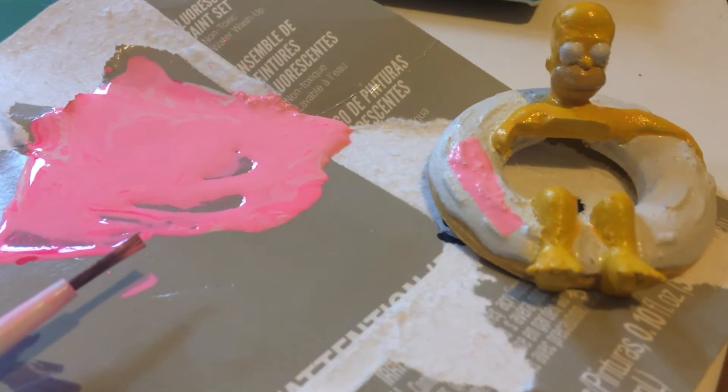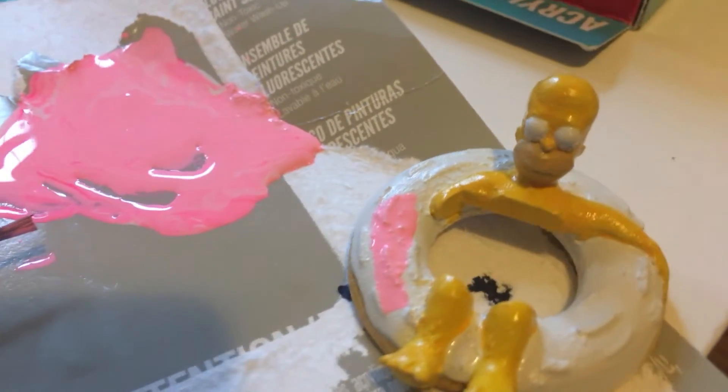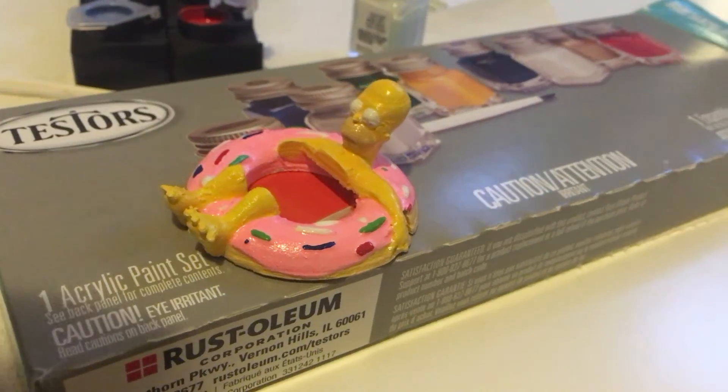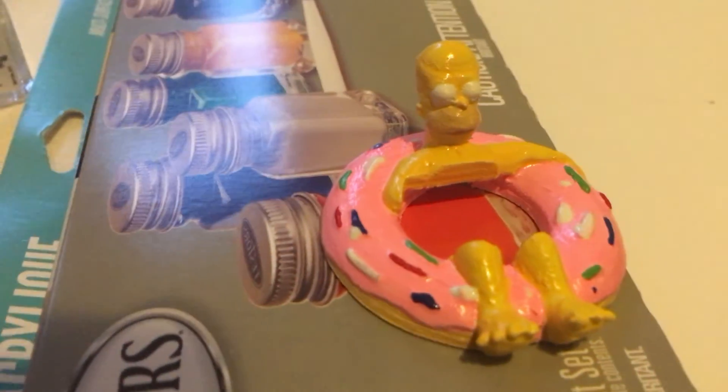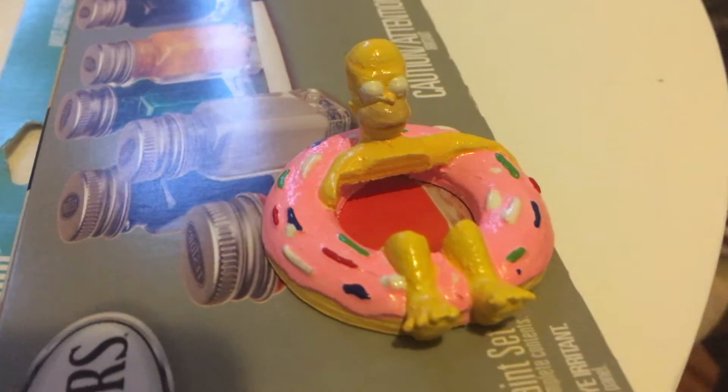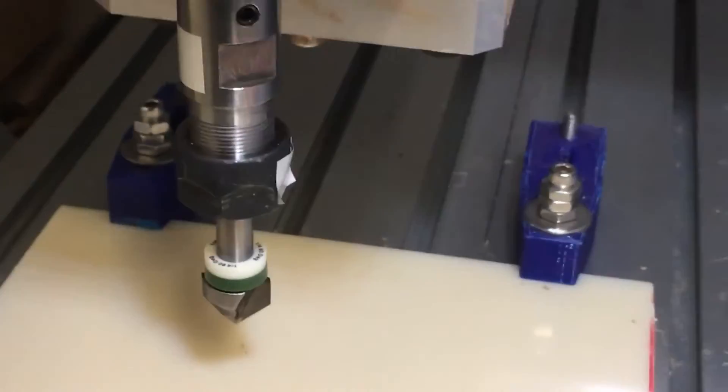So a small metal disc with a known thickness completes a circuit when the tip of the tool moves down and touches it. This offset value is stored in the software. I thought the plastic base that this touch plate came with was pretty boring, so I decided to make a little homer.